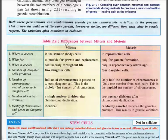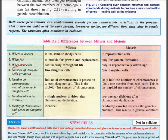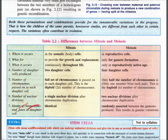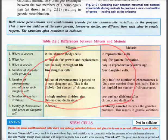The differences between mitosis and meiosis include: where it occurs, what it's for, when it occurs, number of daughter cells produced, number of chromosomes passed to each daughter cell, number of nuclear divisions, and the identity of chromosomes and genes in the daughter cells. Go through all of that for your studies.